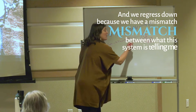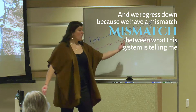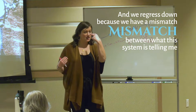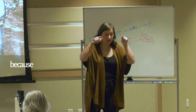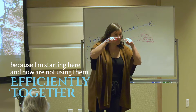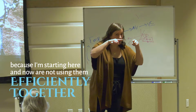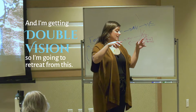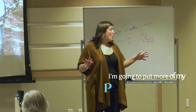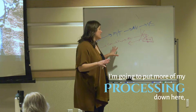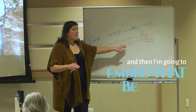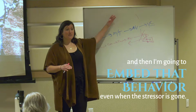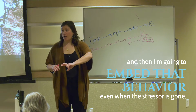We regress down because we have a mismatch between what this system is telling me. I'm starting here and now I'm not using them efficiently together and I'm getting double vision. So I'm going to retreat from this and put more of my processing down here, and then embed that behavior even when the stressor is gone.